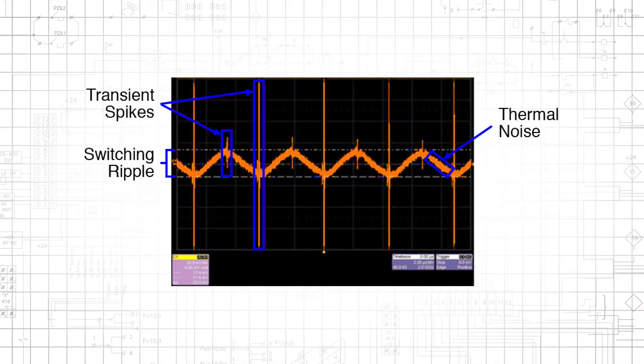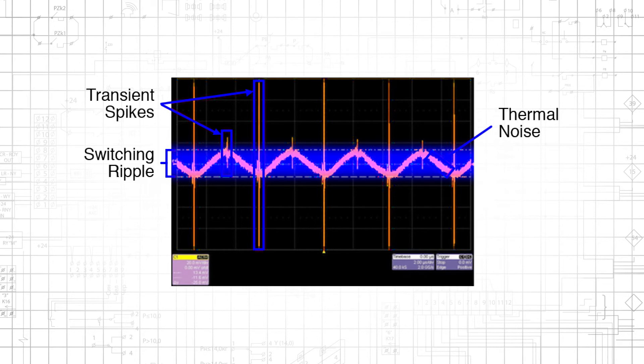One very common type of noise found in DC voltages is the ripple generated by switch mode regulators. The word ripple refers to small, periodic variations associated with the regulator's on-off switching action. This measured signal exhibits switching ripple as well as two other types of noise.